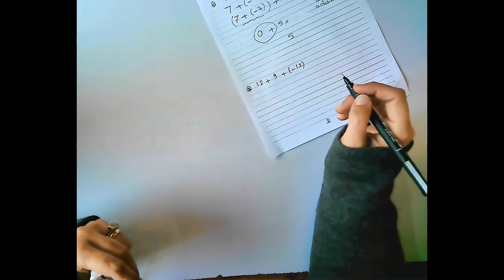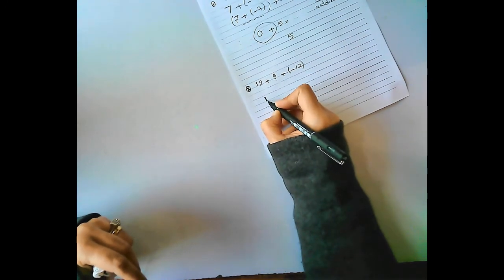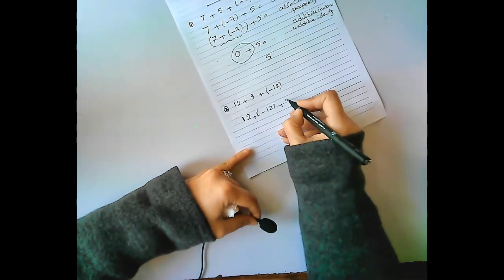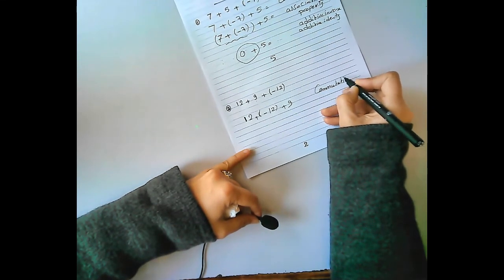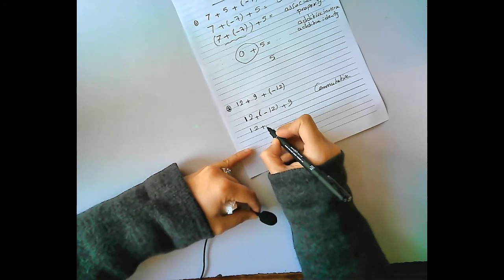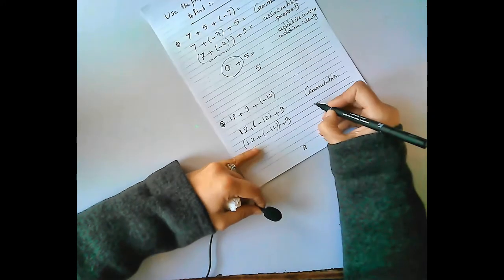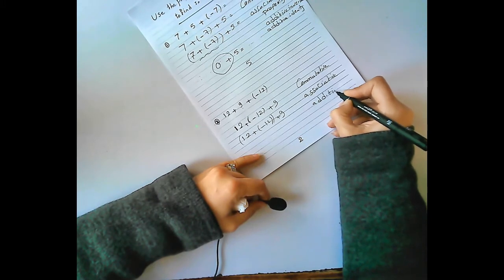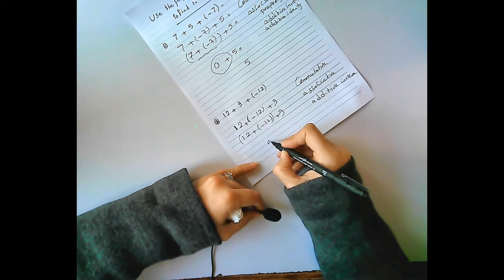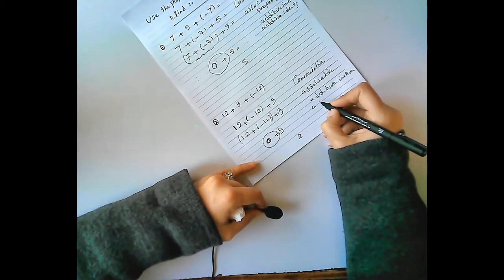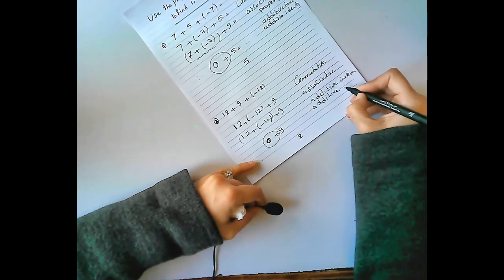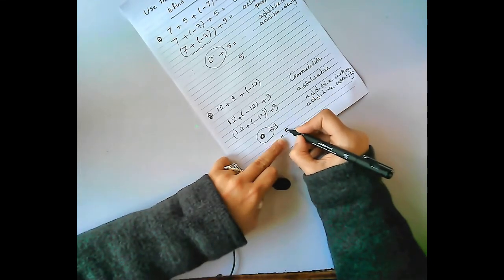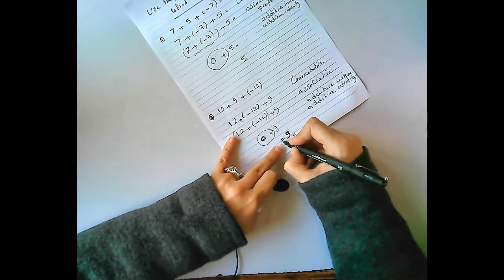Number 2: 12 plus 9 plus negative 12. Step 1: rearrange to 12 plus negative 12 plus 9 — commutative property. Step 2: (12 plus negative 12) plus 9 — associative property. 12 plus negative 12 equals 0 — additive inverse. Then 0 plus 9 — additive identity — equals 9.